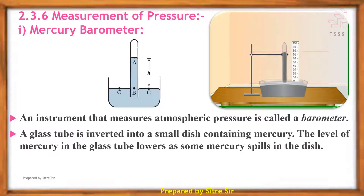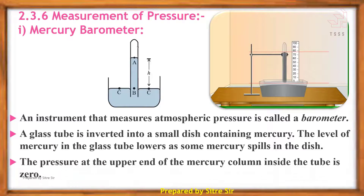This is the glass tube. Mercury fills the middle portion, and at the upper end of the mercury column inside the tube, there is a vacuum — the pressure there is zero.